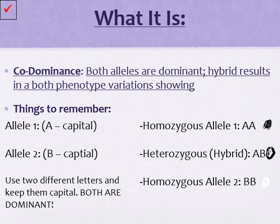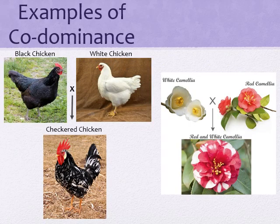Let's take a look at some real-life examples. If you took a black rooster and crossed it with a white chicken, you would actually get a checkered chicken, also known as ermine. And over here on the right, if you crossed a white camellia with a red camellia, you would actually get both traits being shown in the hybrid.